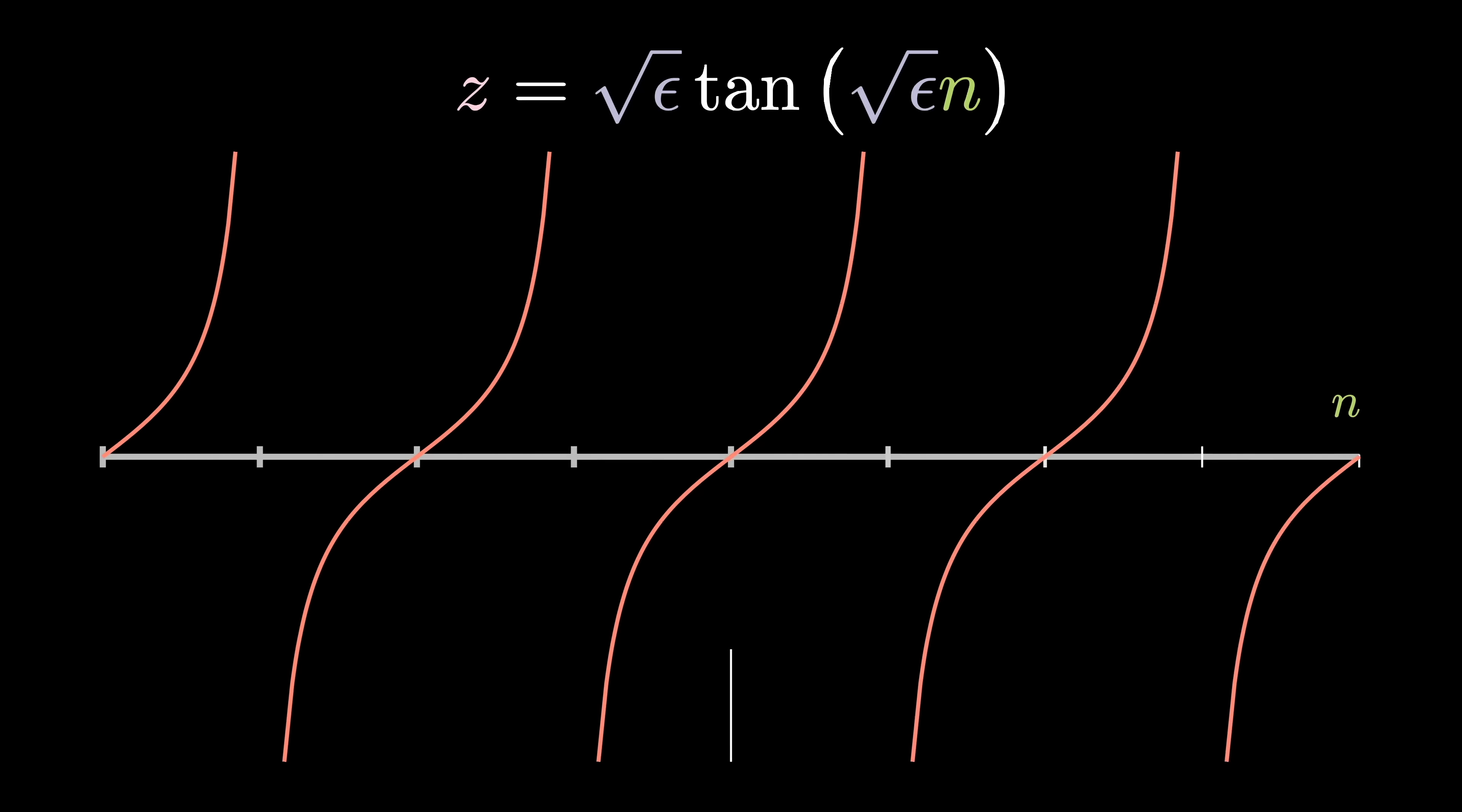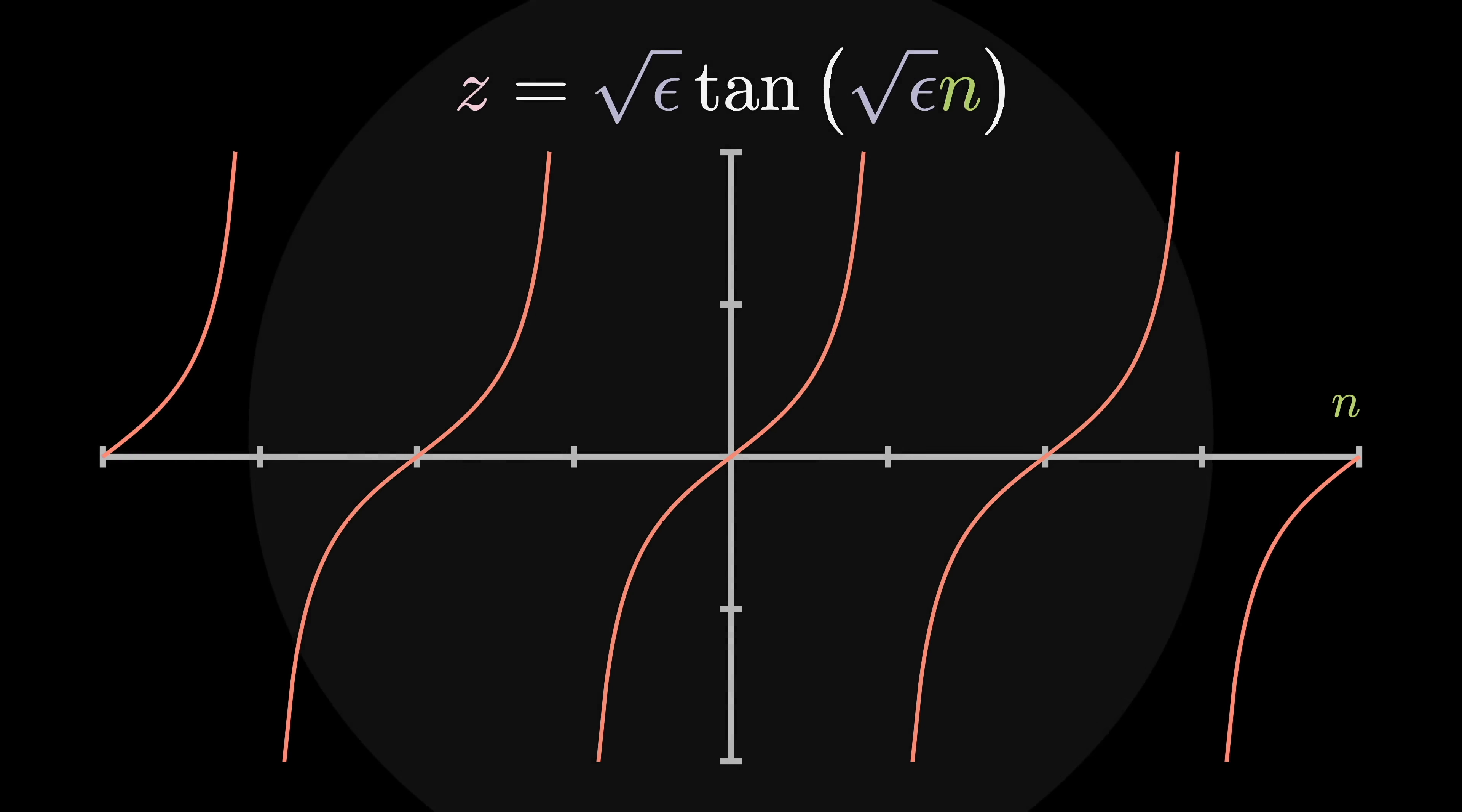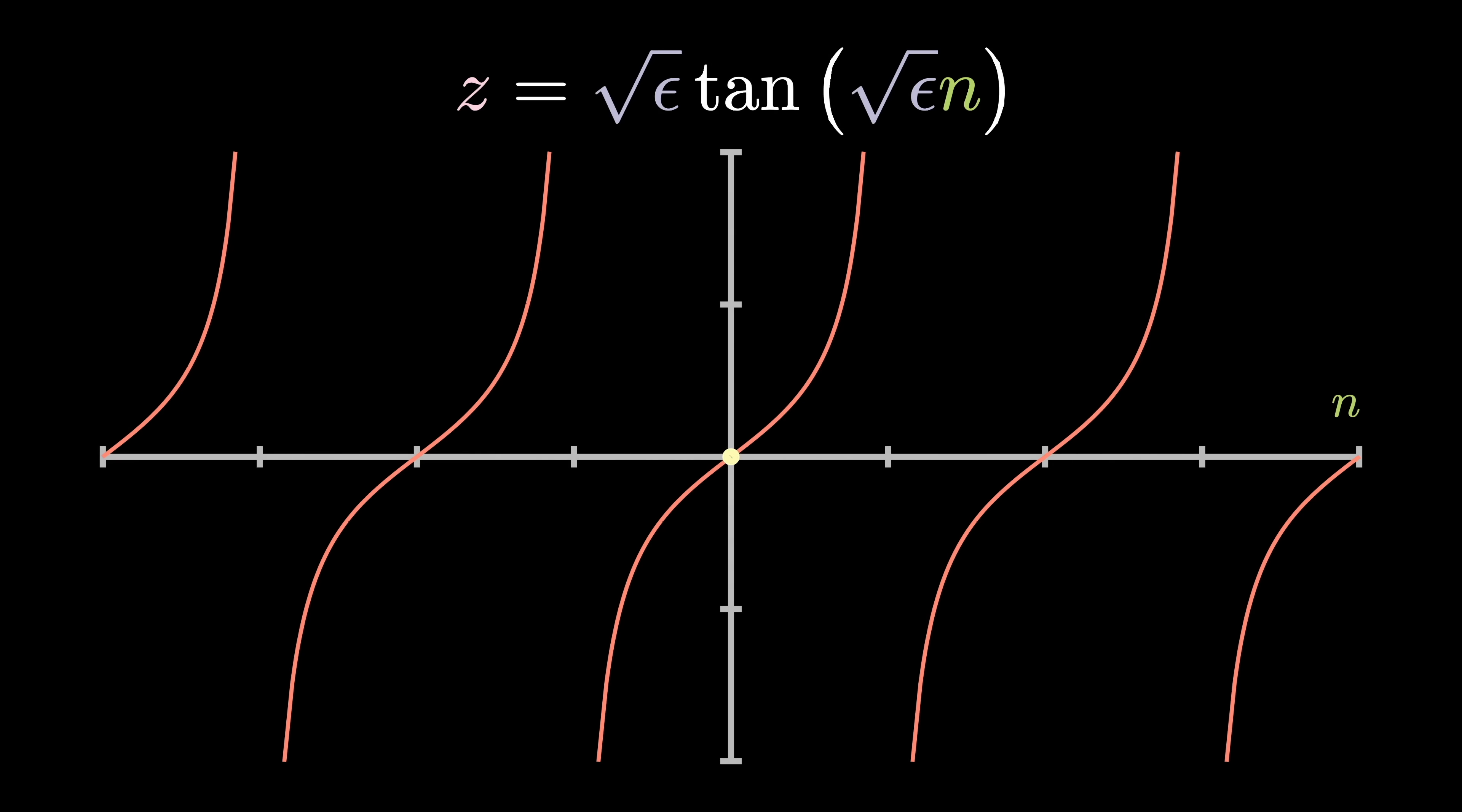Solving this equation, we get z sub n equals root epsilon tan root epsilon n. Remember though, we shifted everything to the point 1 half, 1 half, meaning that n equals 0 corresponds to 1 half, 1 half.